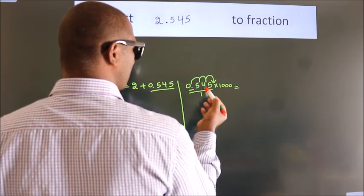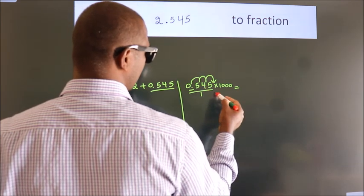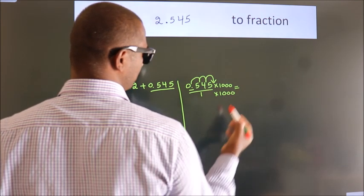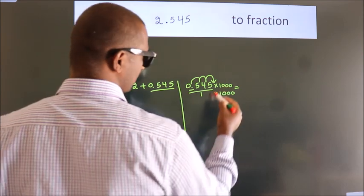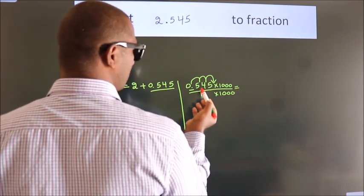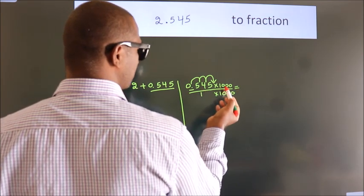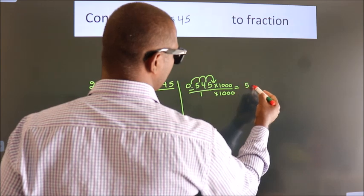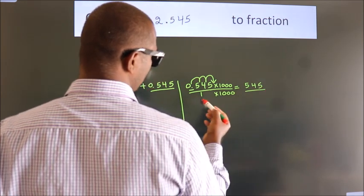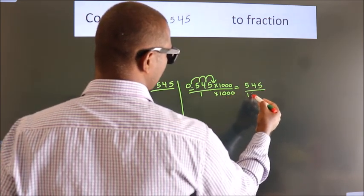Whatever number you are multiplying in the numerator, in the denominator also do the same. Next, 0.545 into 1000 is 545. 1 into 1000 is 1000.